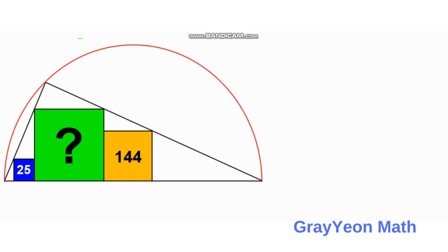The first thing we have to do is notice that this triangle is a right triangle, since it is inscribed in a semicircle. If we label this angle as A, then this angle should also be A, since they are similar triangles — they are part of the same right triangle inscribed in the same right triangle.